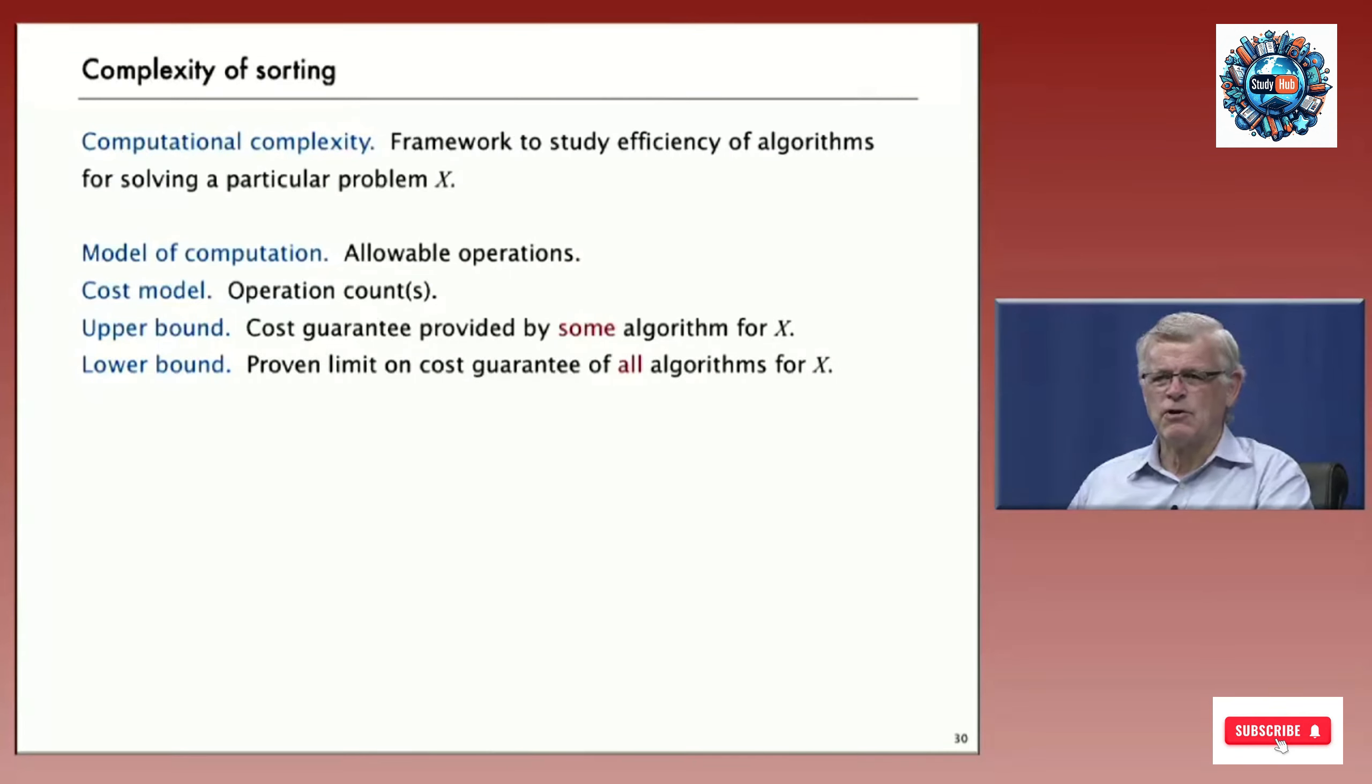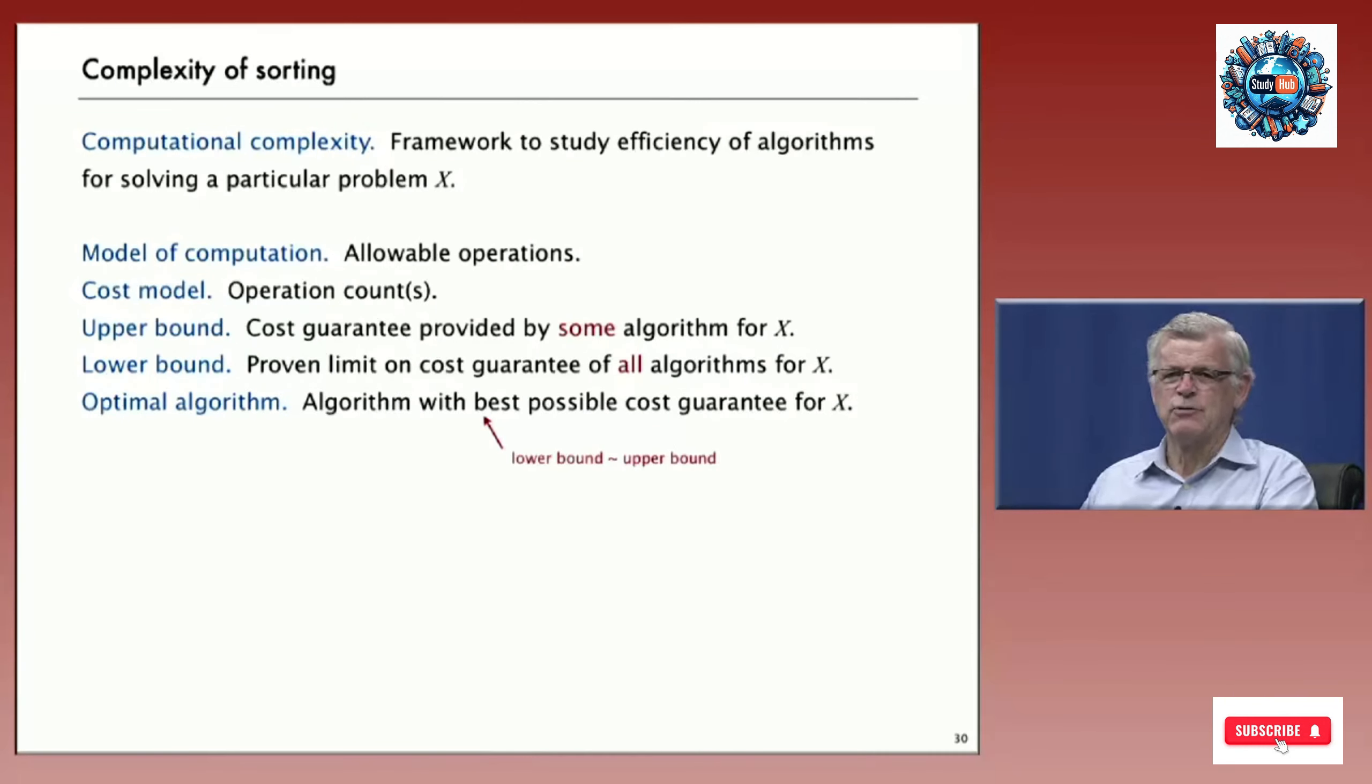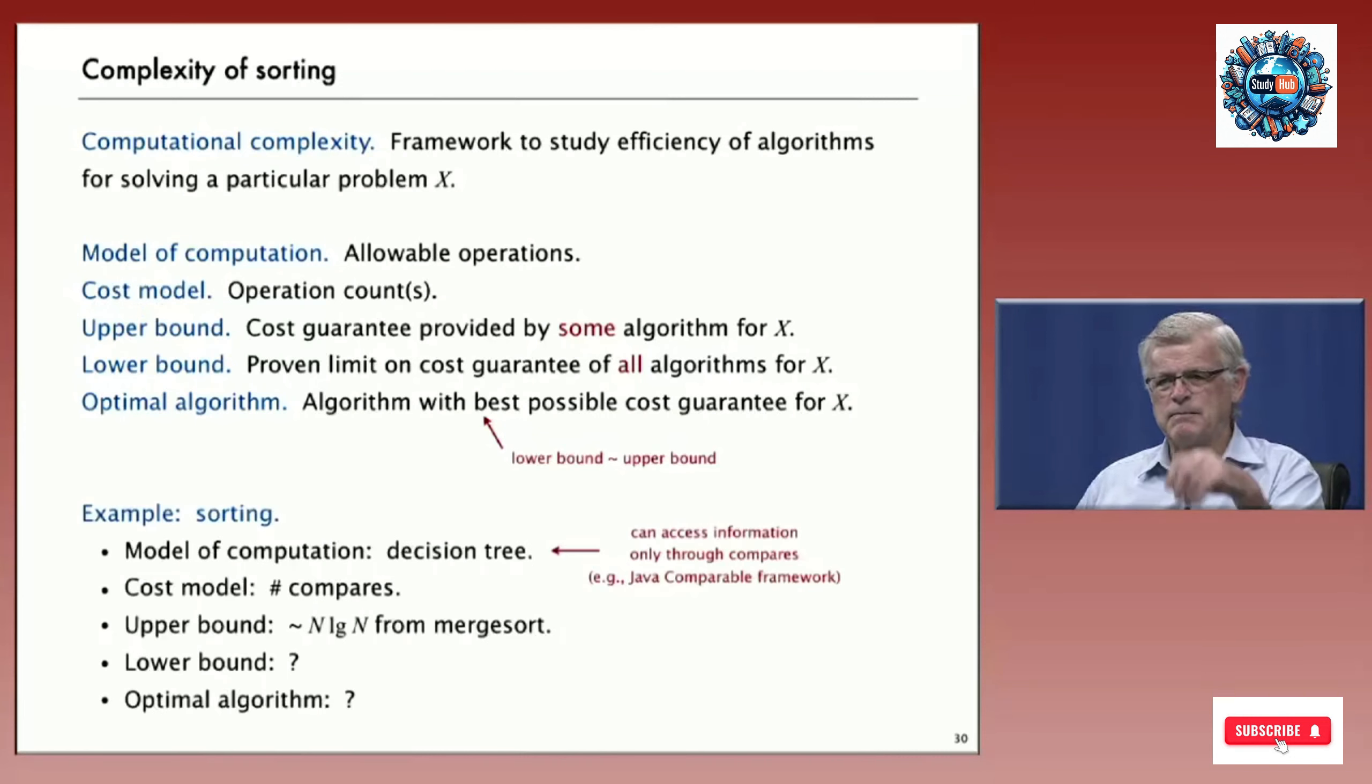And then we also look for a lower bound, which is a limit on the cost guarantee of all algorithms. No algorithm can do better. Now, what we seek ideally is what's called an optimal algorithm, where we prove that the upper bound and the lower bound are the same. That's an algorithm that we know has the best possible cost guarantee. That's the ideal for solving any problem. So, for sorting, let's look at what each of these are.